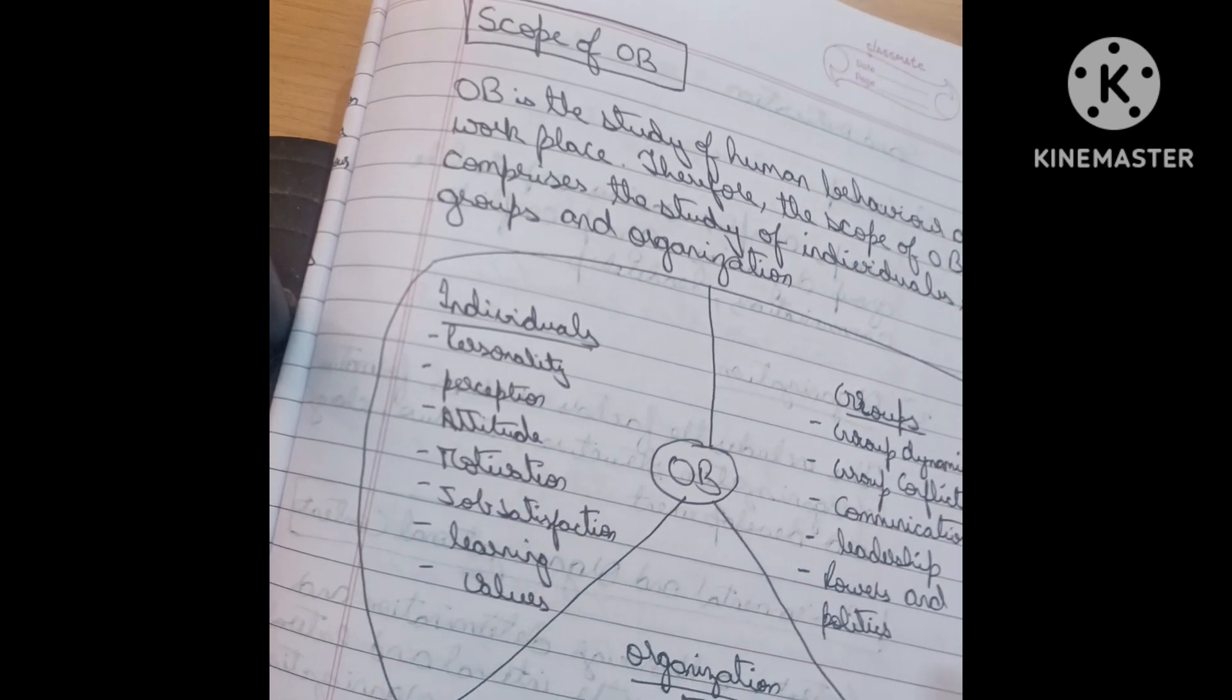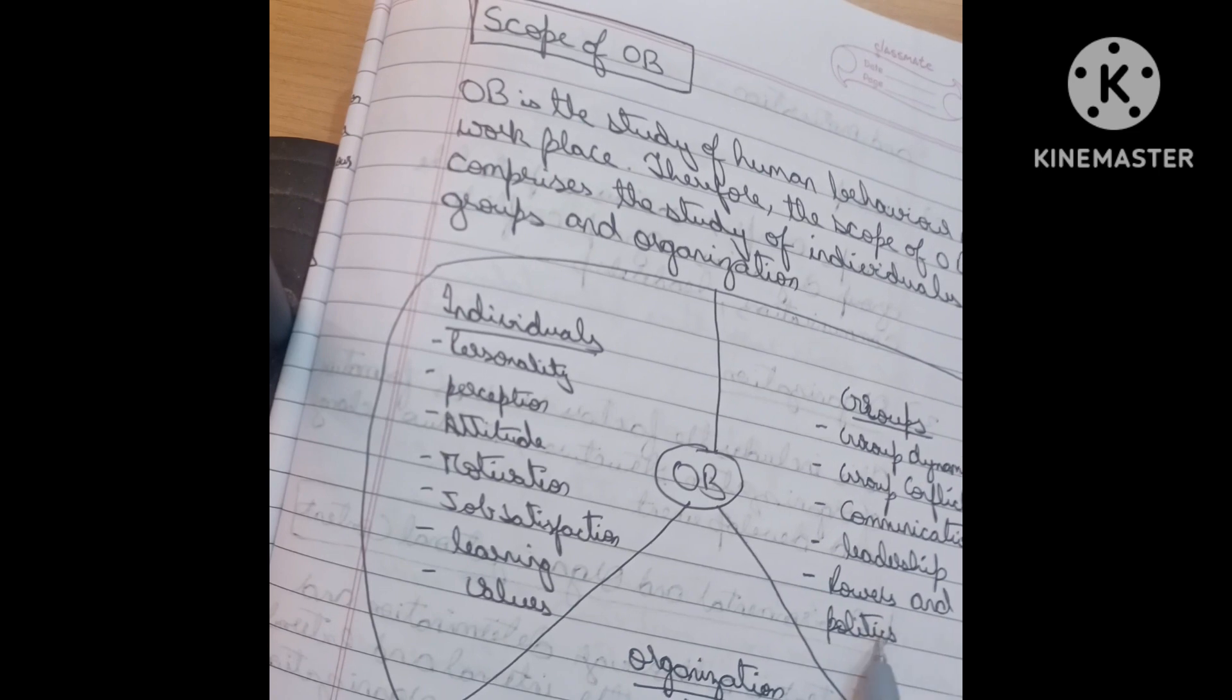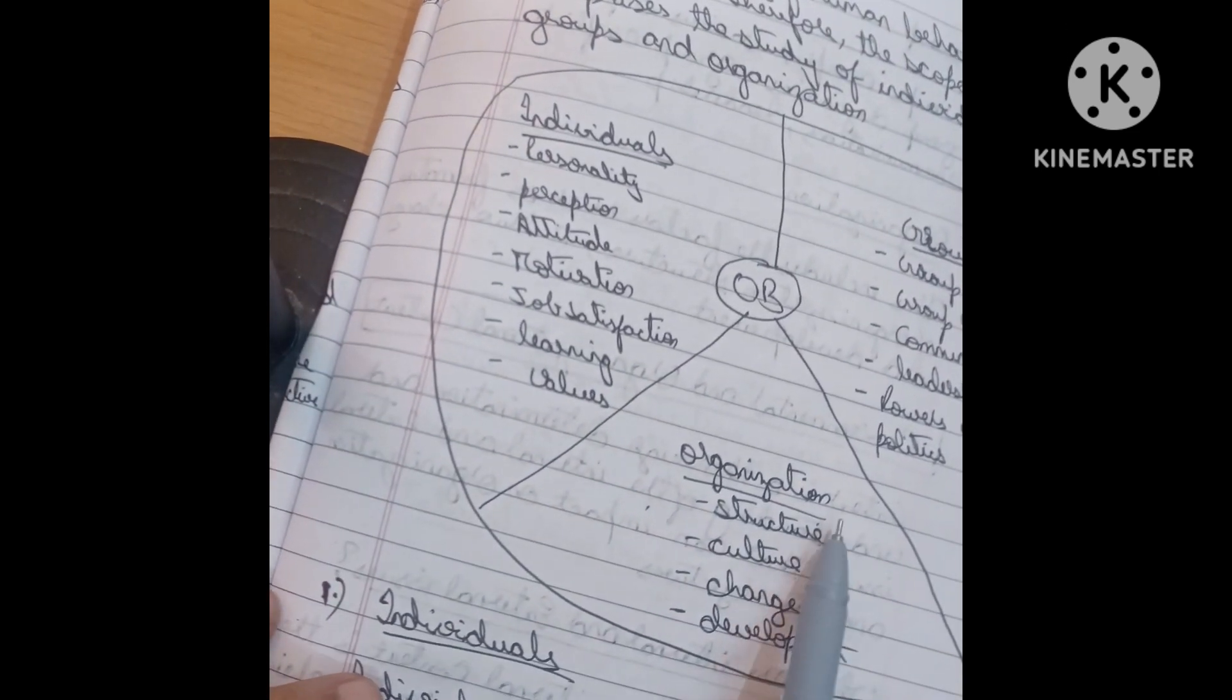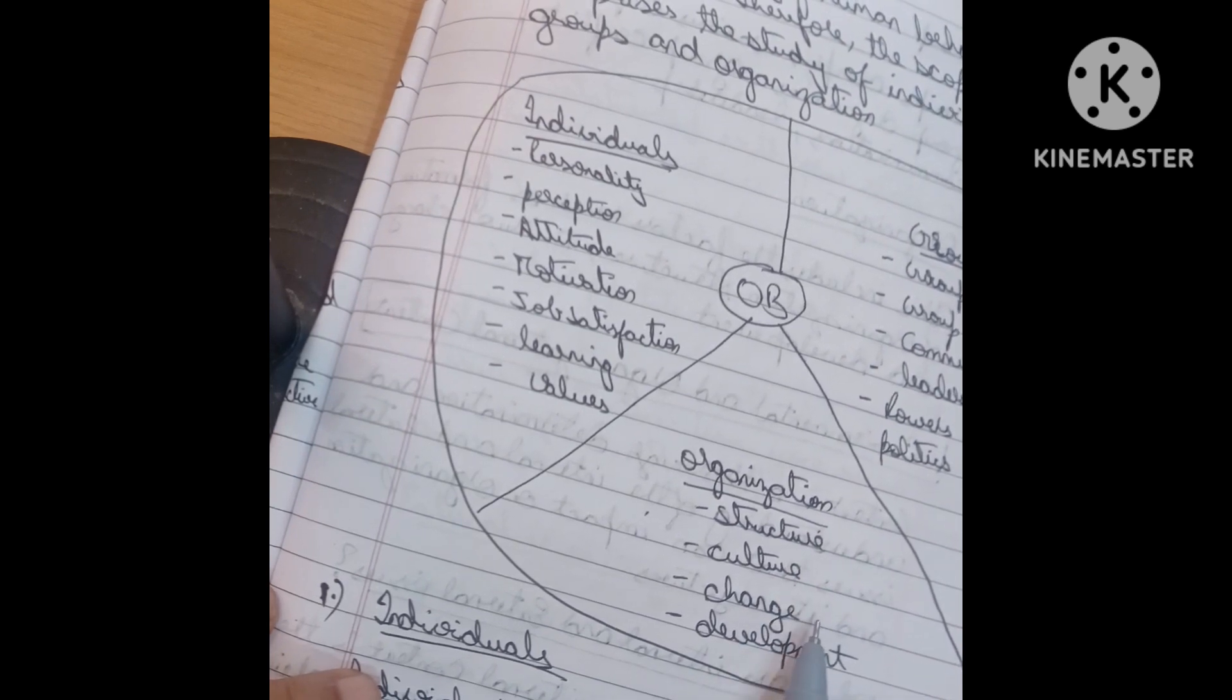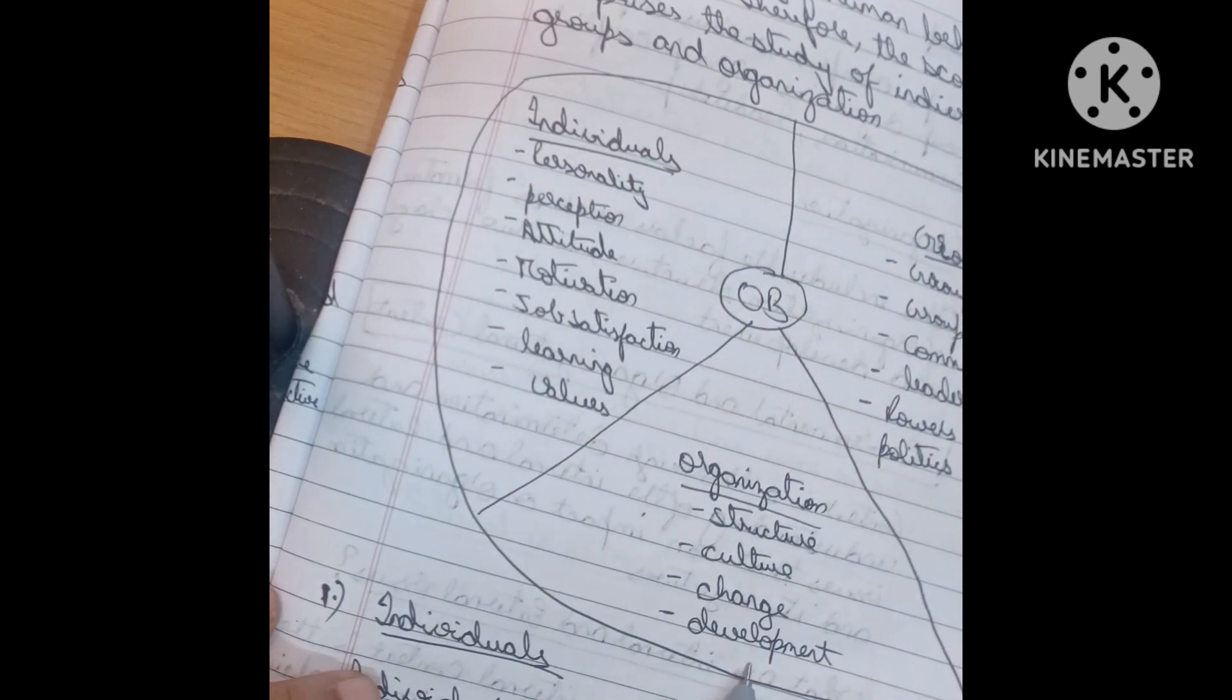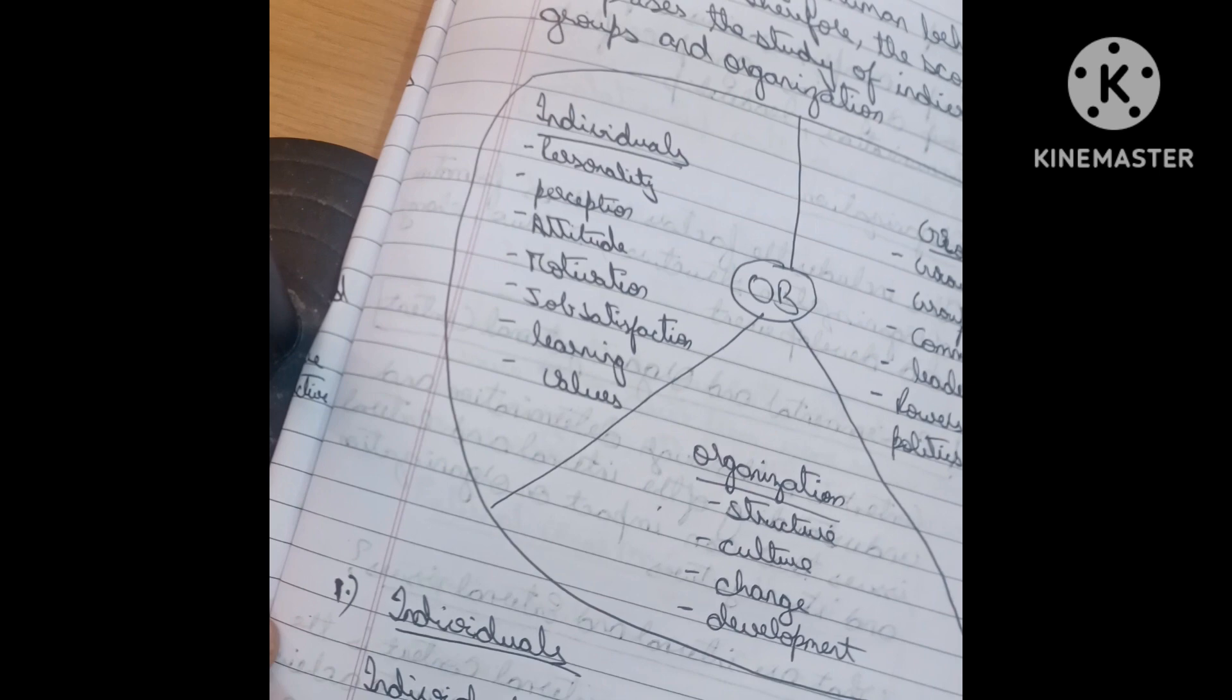These are the important things and in the groups group dynamics, group collection conflicts, communication, leadership, powers and politics. We have to maintain these all the things and then for organization we have to know the structure of the organization, culture of the organization, what are the changes are applied in the organization, development of the organization. How we are behave, how we are cooperate for developing the organization. This everything is coming under scope of in OB.